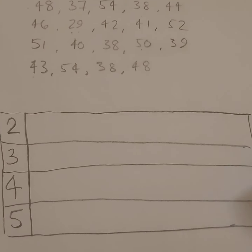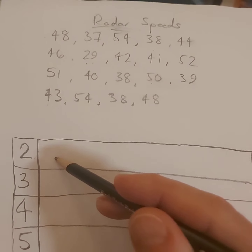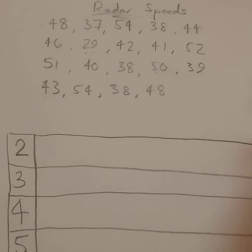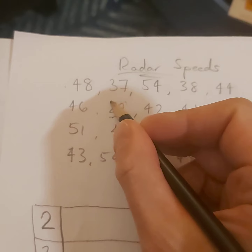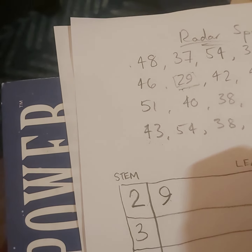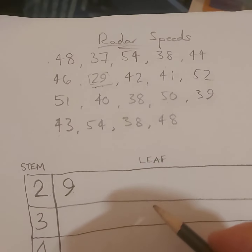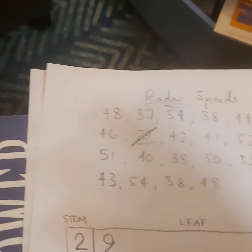Now I want to isolate each of the numbers in the 20s from the list and represent all the numbers that occur in the ones column. Any number that starts with a two — I find it, and I see that 29 is there. So I write a nine in the leaf part of the stem and leaf plot. The stems are the first digits, and the leaves represent the remaining digits. There's only one number in the 20s, so I cross it off so I don't duplicate it.